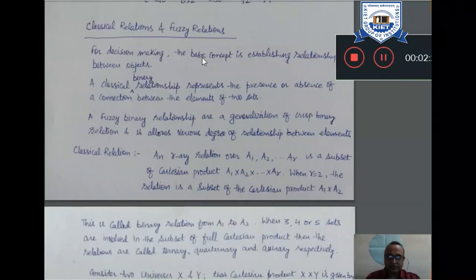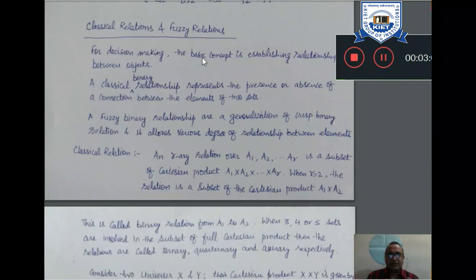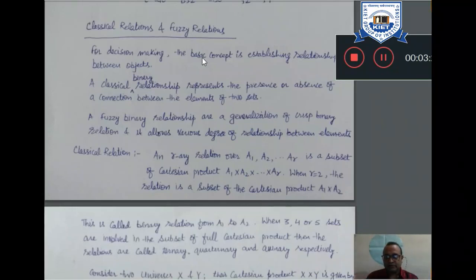Say for example, we are having set A and set B and we want to make a relationship among the elements of set A with the elements of set B. Set A is available in one universe of discourse and set B is available in another universe of discourse. That relationship will be the ordered pair of elements from one set to another. In a crisp relationship, either there will be a relationship among one element of the first set with another element of the second set, or there will not be any relationship at all. There are only two things: either yes or no.